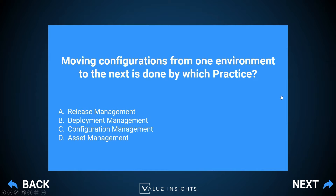Question nine: moving configurations from one environment to the next is done by which practice? The correct answer is B — deployment management. Option A — release management — is responsible for coordinating the activities needed to make services available for customers and users; it may include coordinating the movement of configurations but it's only the coordination, not the doing itself, which is deployment management. Option C — configuration management — ensures we have a CMDB in place and understand what configuration items we have and how they connect. Option D — asset management — considers the financial impact of IT assets.